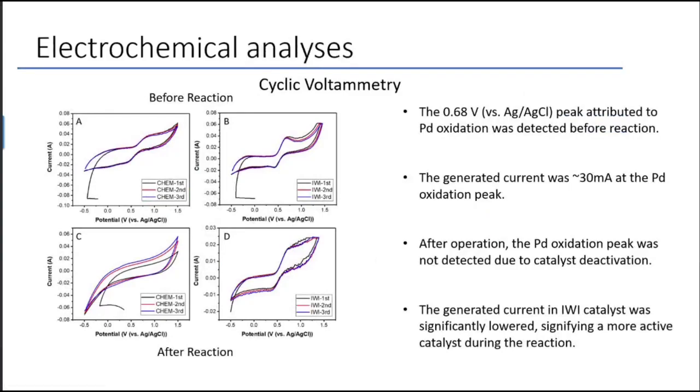The last piece of characterization that I wanted to show is looking at the cyclic voltammetry of our catalyst, both before on top and after on the bottom. As you can see, the chemical catalyst, chemically reduced catalyst, loses its overall oxidation peak after reaction, which shows that the catalyst was deactivated and also leached off of the support surface, which is not seen in the incipient wetness impregnation catalyst. It shows that the incipient wetness catalyst is a more reliable catalyst and it can be recycled and reused after the reaction is complete.